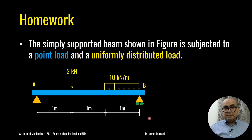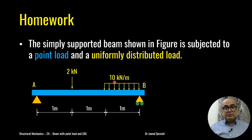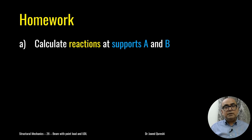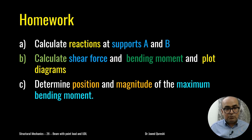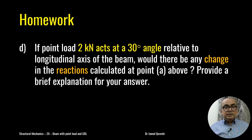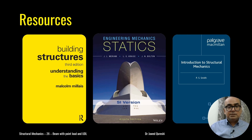As homework, solve this problem: a 3-meter simply supported beam with a 2 kN point load and a UDL of 10 kN/m applied at the end portion of the span. Calculate support reactions, plot the shear force and bending moment diagrams, determine the position and magnitude of the maximum bending moment, and if the 2 kN point load acts at 30 degrees, find the change in reactions. Thanks for watching — see you in the next lecture.